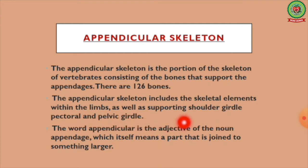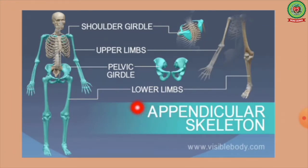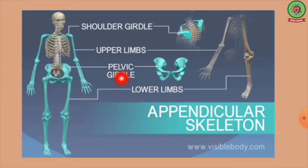The word 'appendicular' is the adjective of the noun appendage, which itself means a part that is joined to something larger. In this image we can see the appendicular skeleton, which consists of the shoulder girdle, upper limbs, pelvic girdle, and lower limbs.